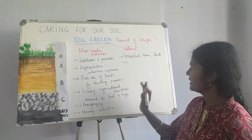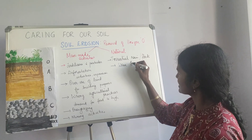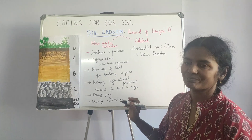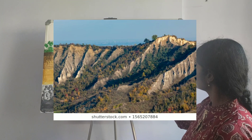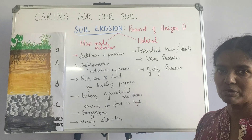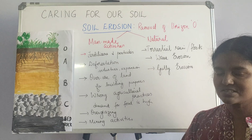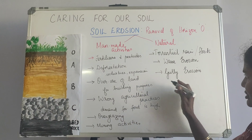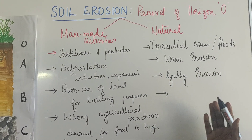The same thing happens with wave erosion, which occurs near seashores. Then there is something called gully erosion — when it is sloped on mountain slopes, water courses through and forms stream-like channels called gullies. That is gully erosion, which again happens because of natural rains or floods.